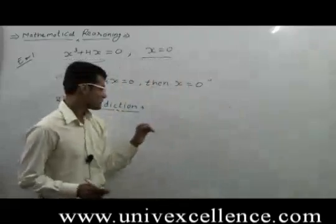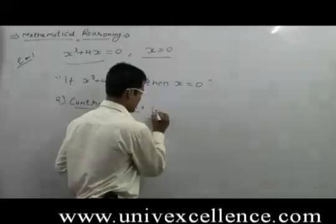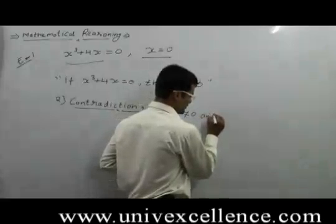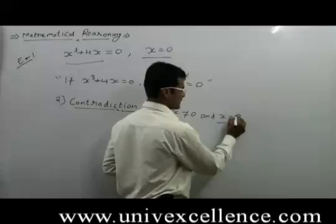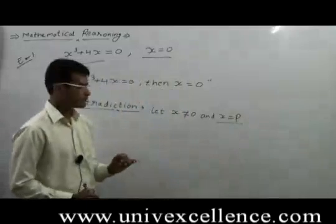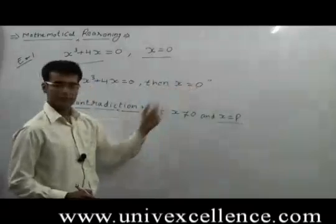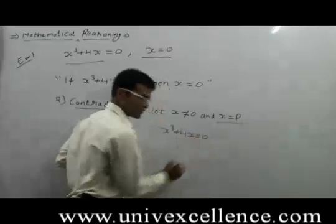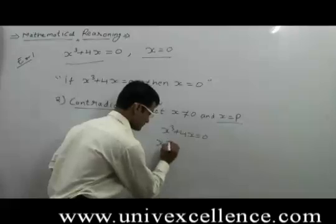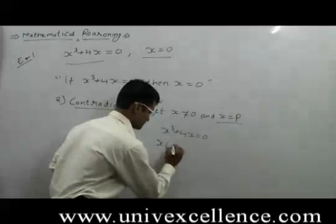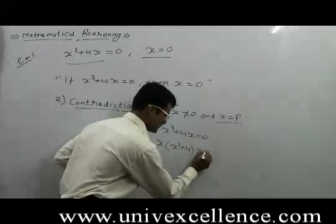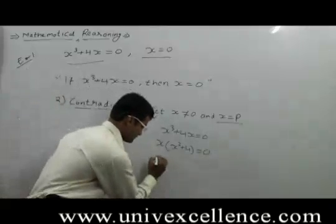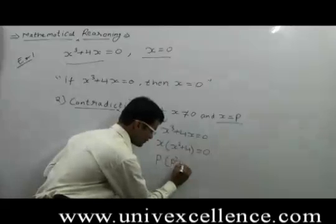Assume that this is false — let x is not equal to 0, and let's say x is equal to some number p. This is the assumed thing. Now if x cube plus 4x is equal to 0, take x as common: x into x square plus 4 is equal to 0. If x is not equal to 0, it is p, so we get p square plus 4.